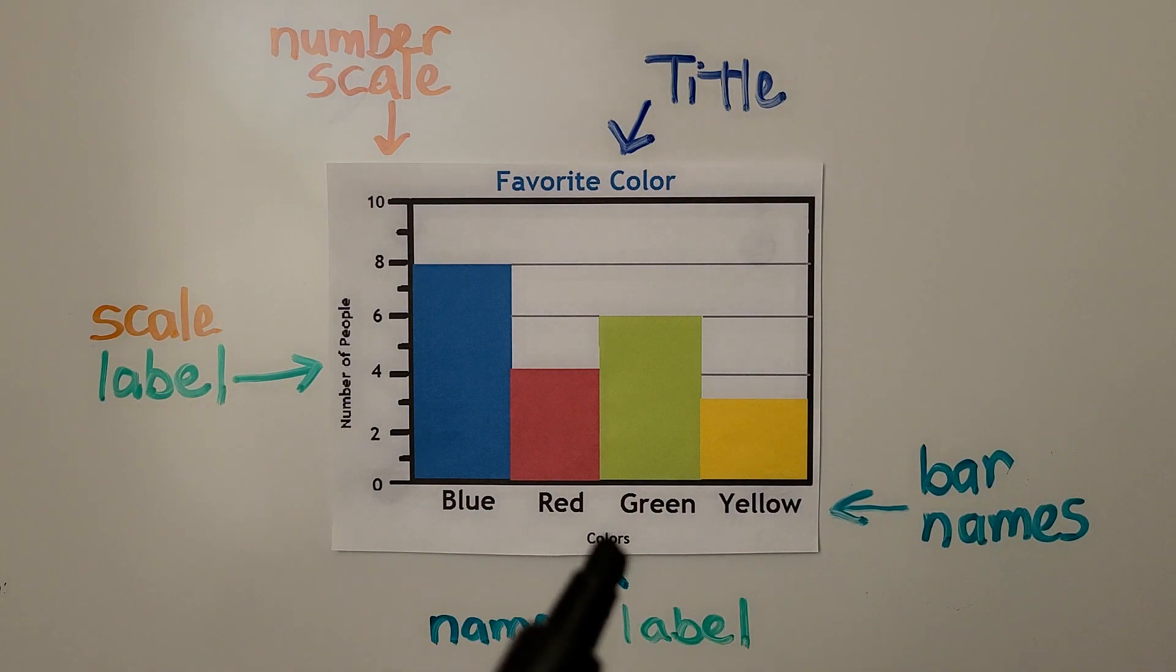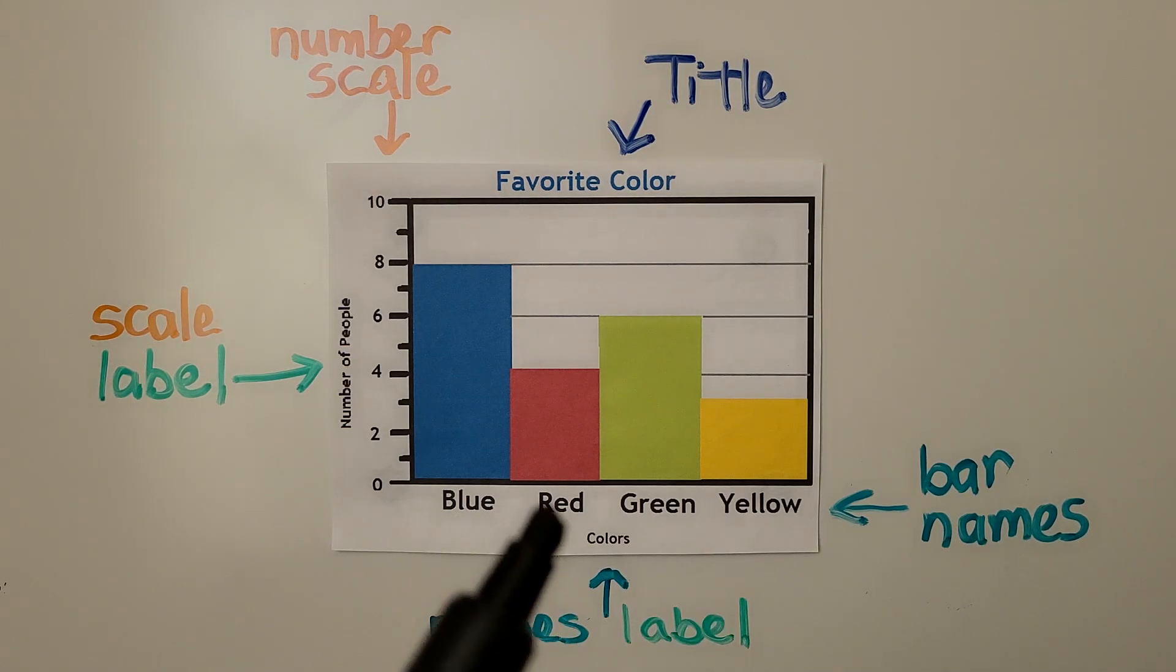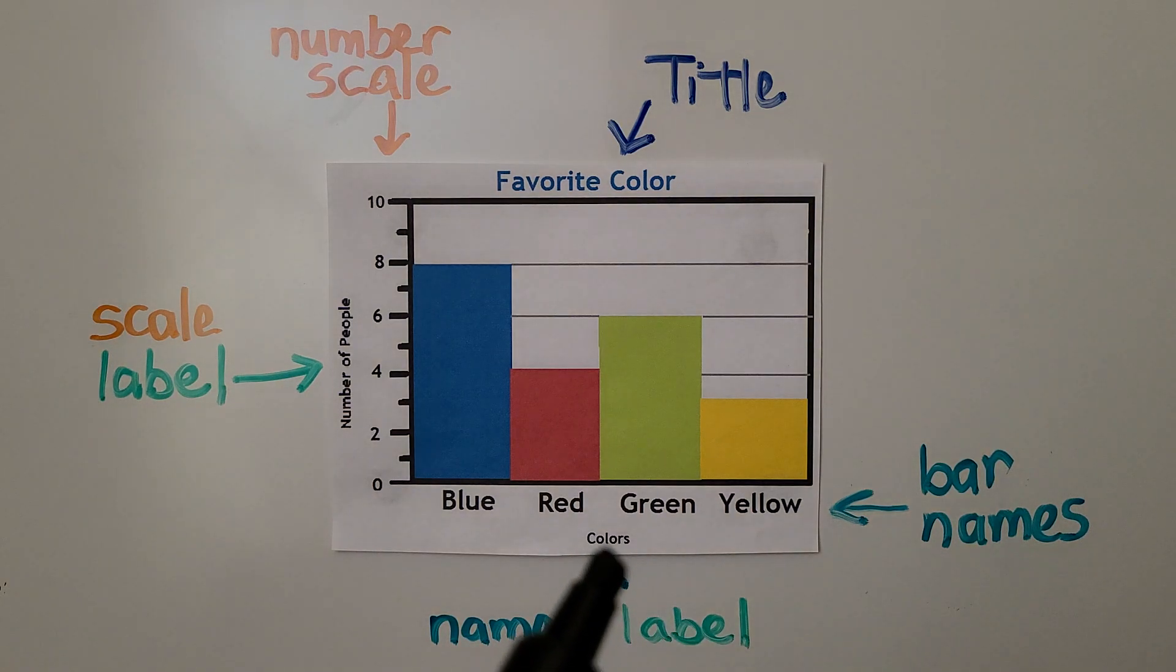Here's the names label and the bars names. This bar is blue, this one's red, this one's green, this one's yellow, and it's called colors.